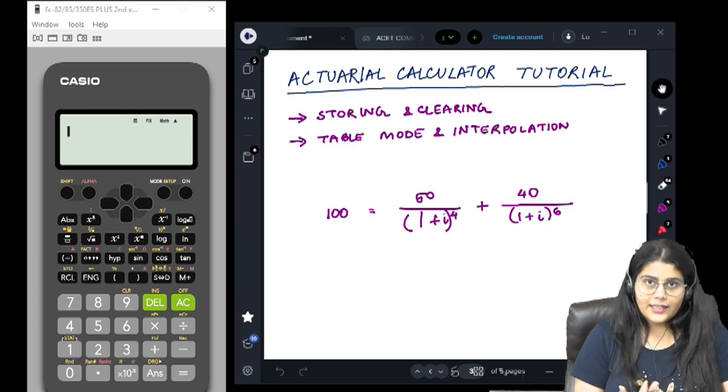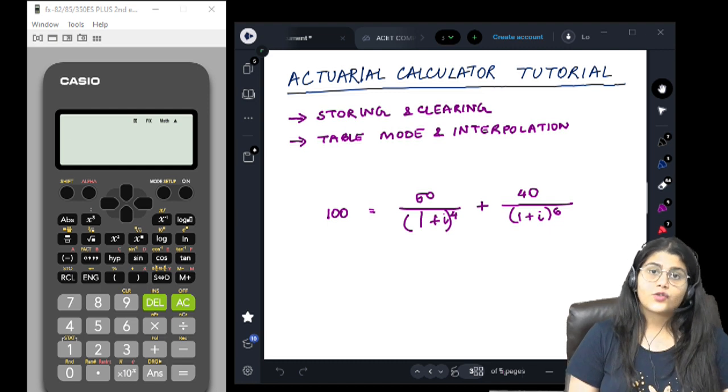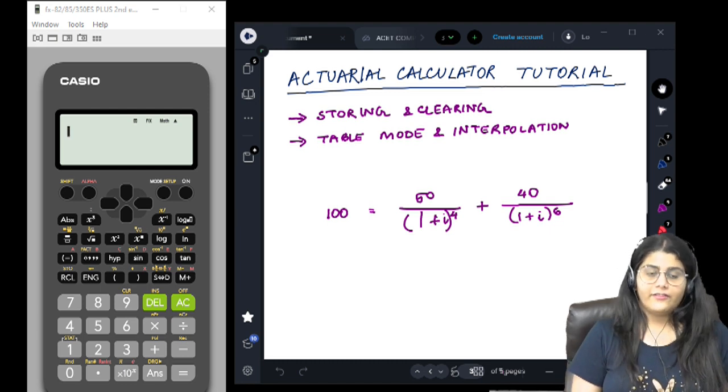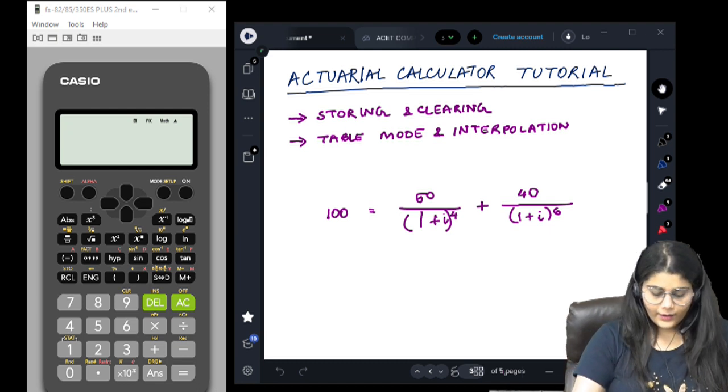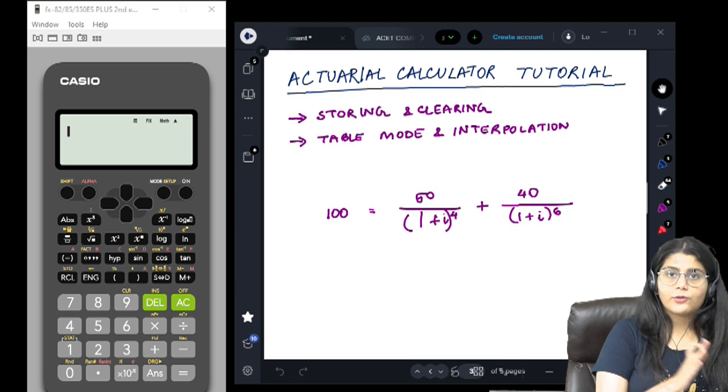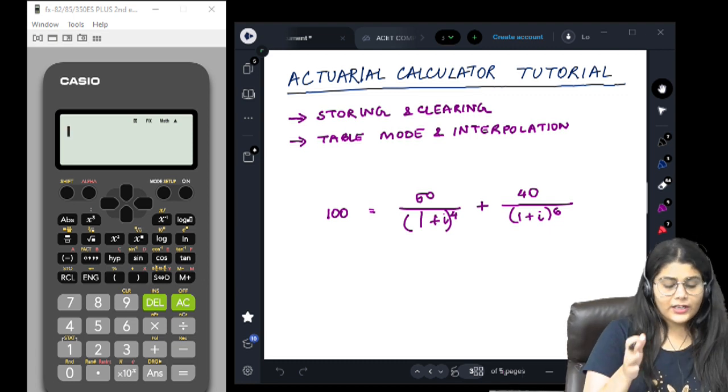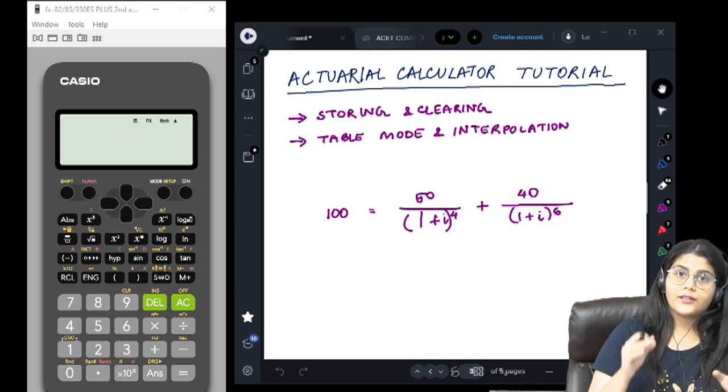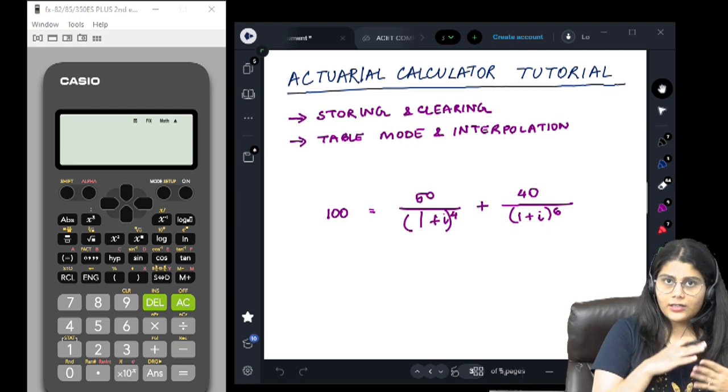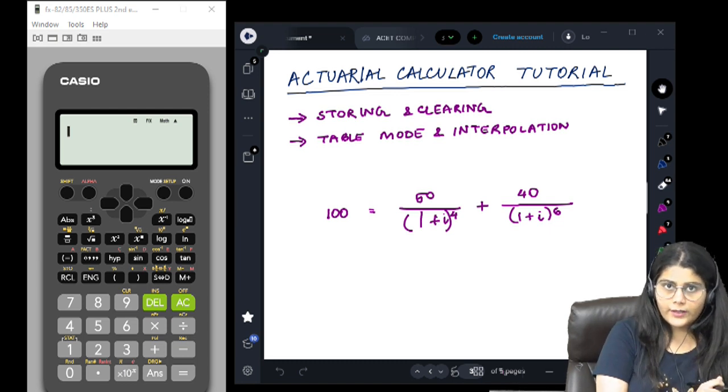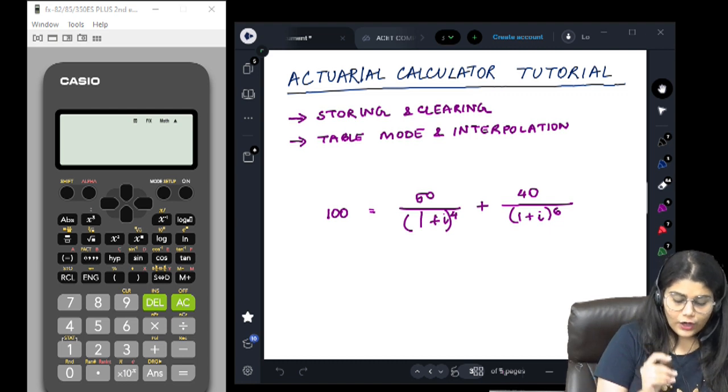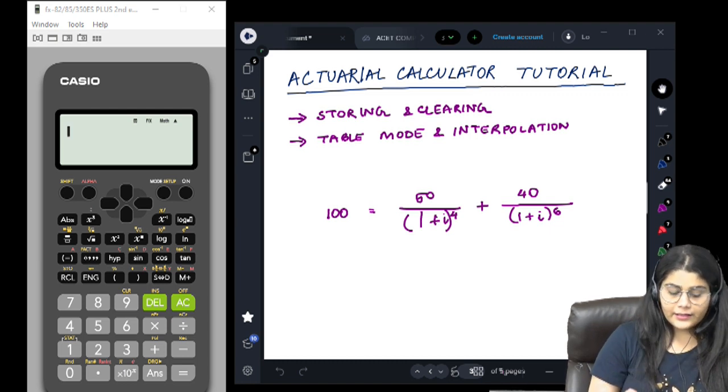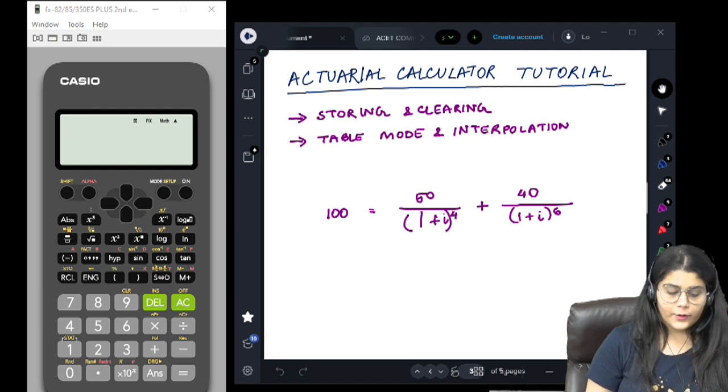The first thing we are going to do is storing and clearing values. Before we learn how to store, let's learn how to clear so that we are sure our calculator is clear from all kinds of stored memory. We can see on top of the 9 number button we have CLR written in yellow.